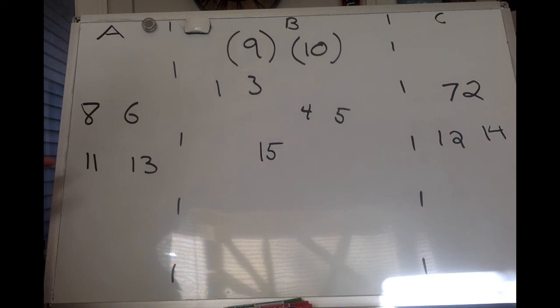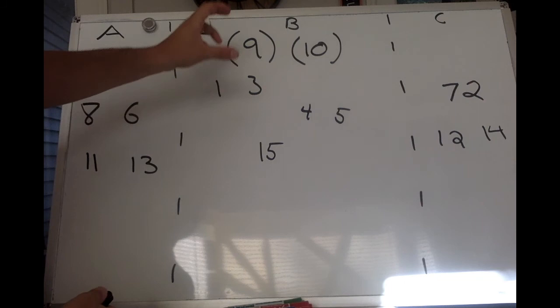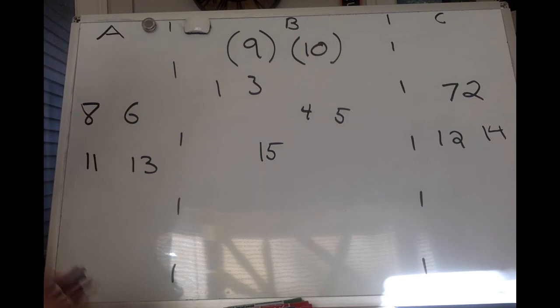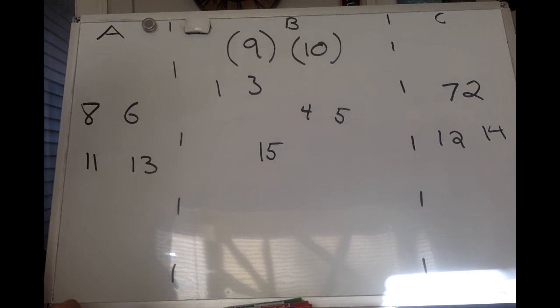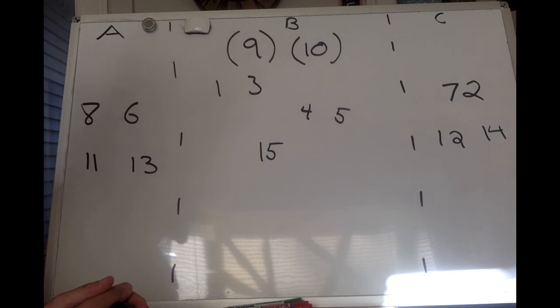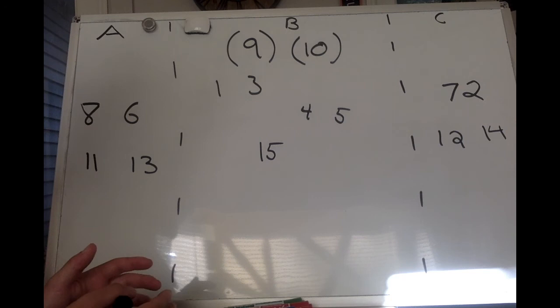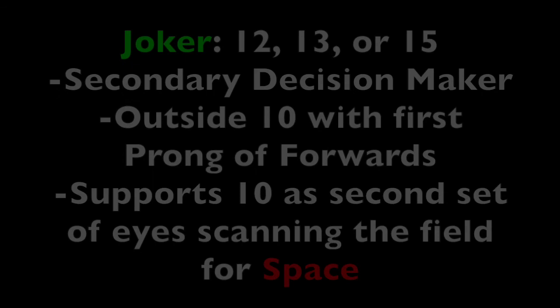Now we've included the backs and can see how they play out. In the A channel you've got 11 and 13, in the C channel you've got 12 and 14, and in the B channel you have your 15. In parentheses you've got your 9 and your 10 — that's because those two players can essentially roam wherever they would like. The 10 really controls the direction, pace, and flow of the game, where the 9 is typically going to follow that ruck and follow that ball. On the edges you've got two forwards, a wing, and a center, so it's balanced on either edge. The 15 is your secondary decision maker — we're going to call that role the joker.